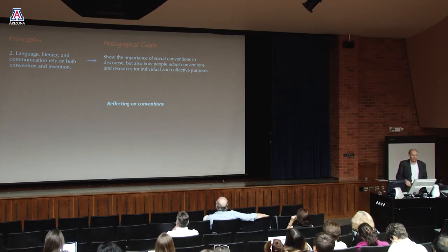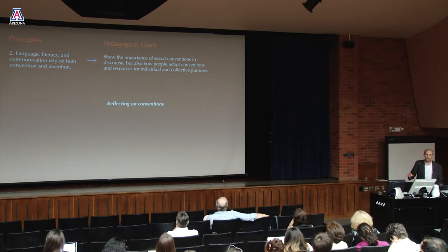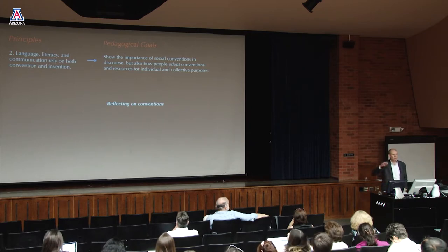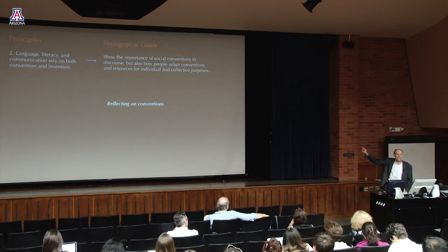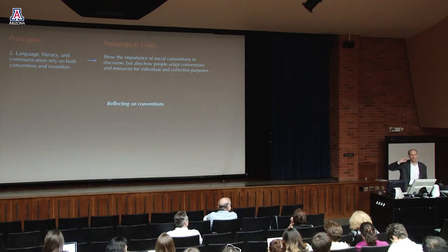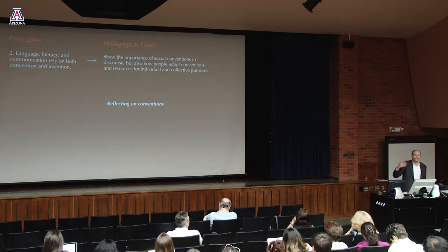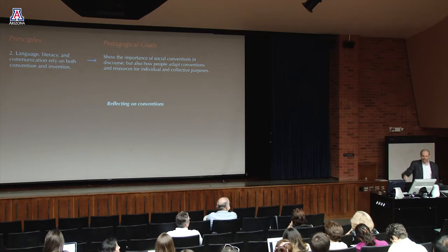Reflecting on conventions means thinking about both process and product. Students could keep journals about all the workarounds they do — like deleting letters to make a margin flush. What other constraints do students work with? When writing a tweet with 140 characters, how do they decide what's most important and what can be abbreviated? What can I assume my readers will understand about the message as I write it?